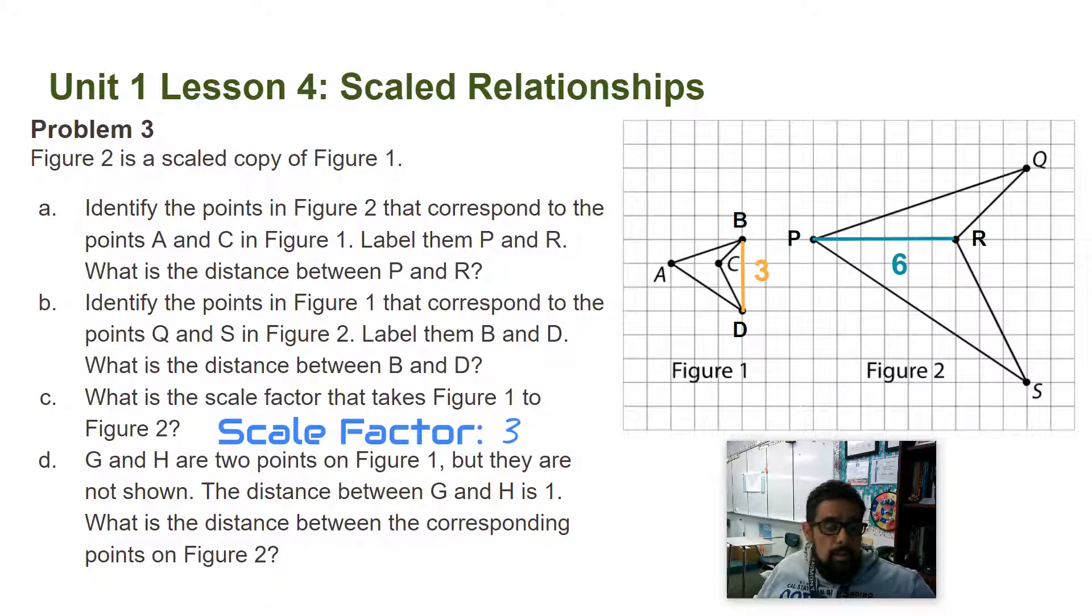Part D: G and H are two points on Figure 1, but they are not shown. The distance between G and H is one. What is the distance between the corresponding points on Figure 2? Okay, so here you have to kind of visualize. They're not shown, so we don't know where G and H is, but we know they're one away. They're one apart.